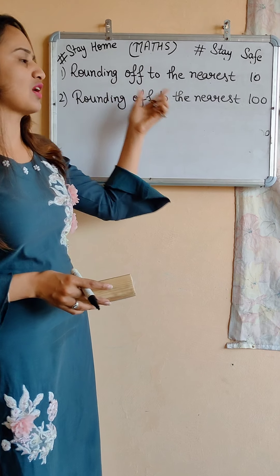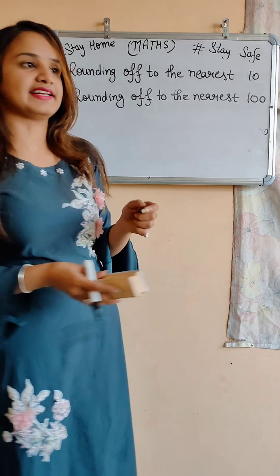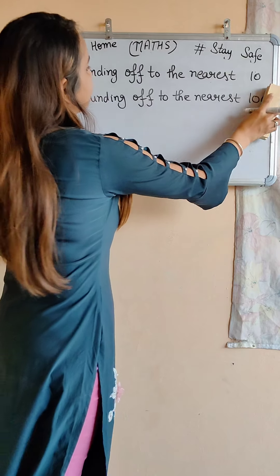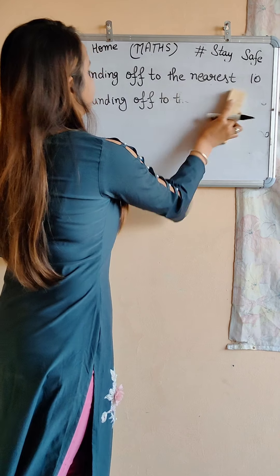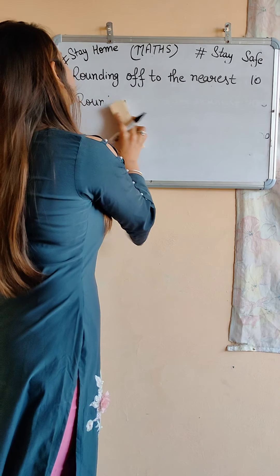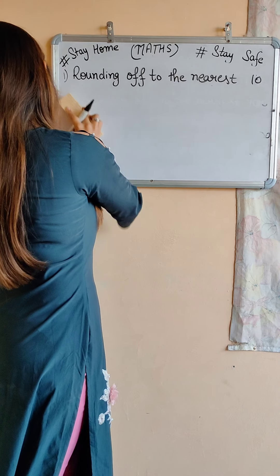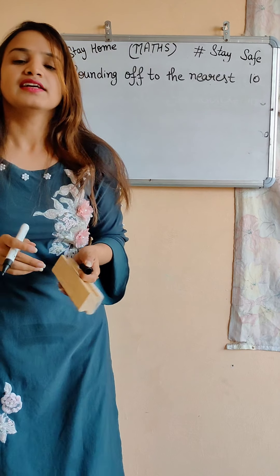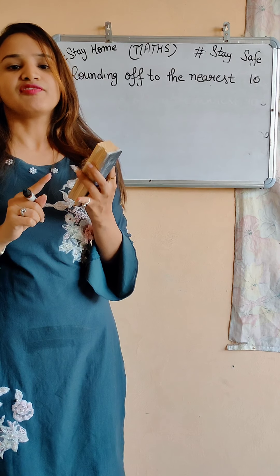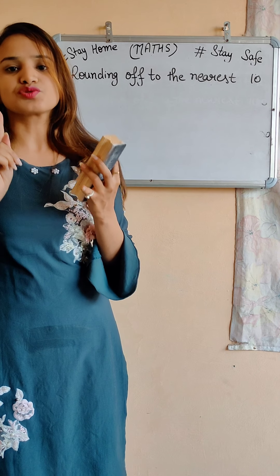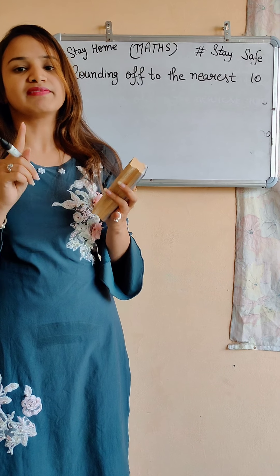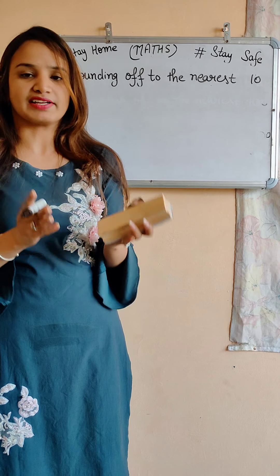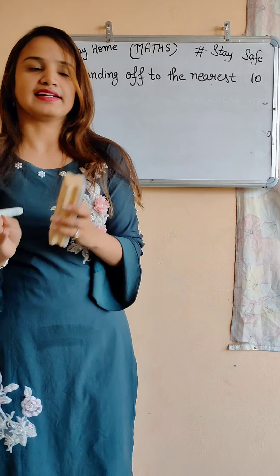First we will discuss about rounding off to the nearest 10. In rounding off to the nearest 10, first we will find those two 10s between which our given number lies.